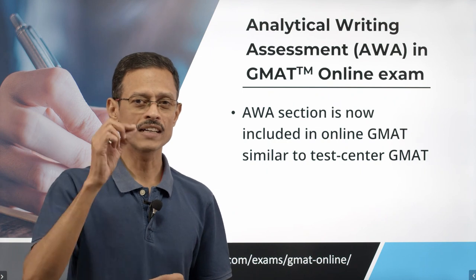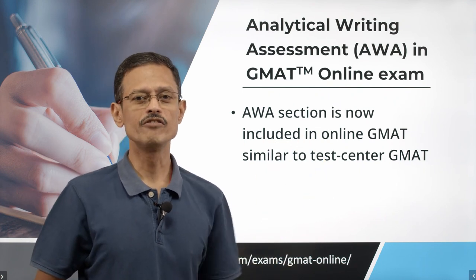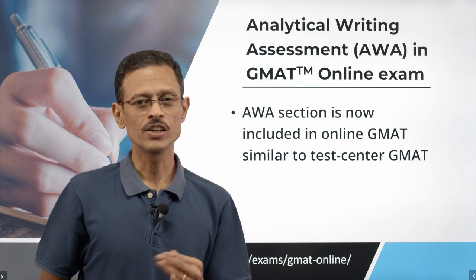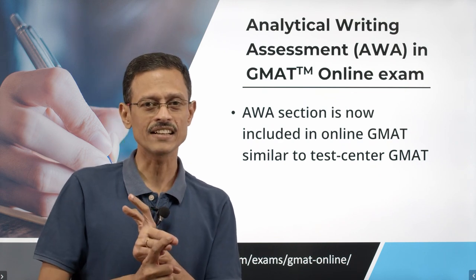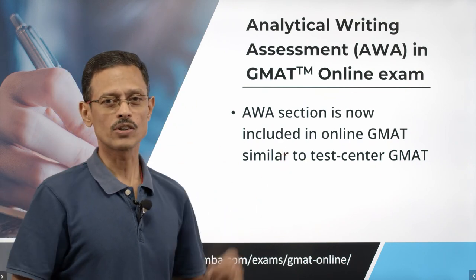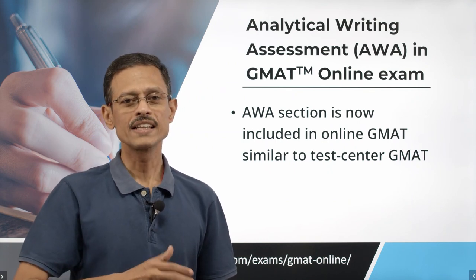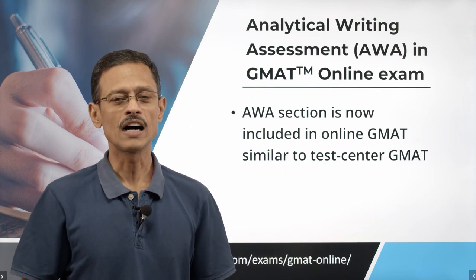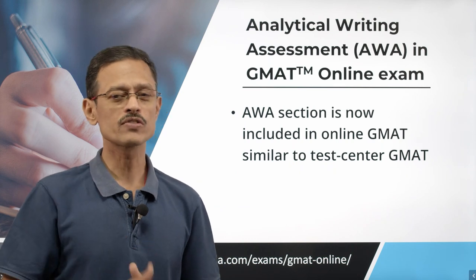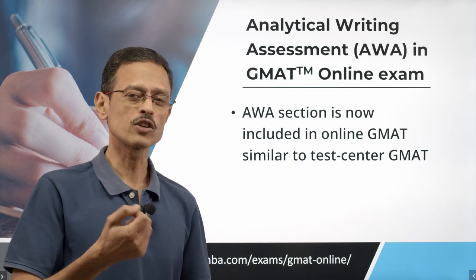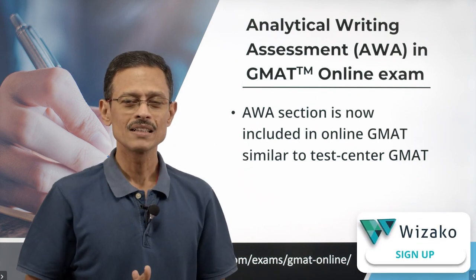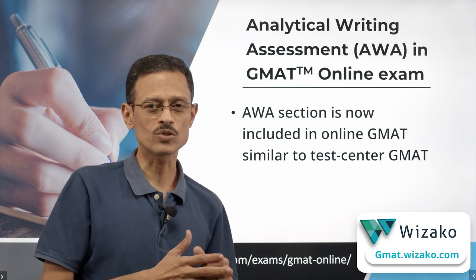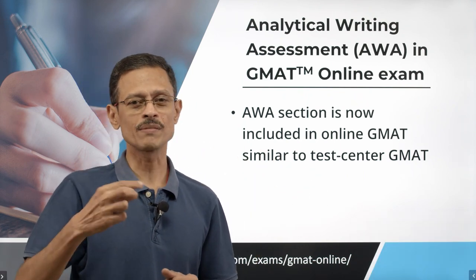The first change: the online examination till April 7th did not have the AWA — Analytical Writing Assessment section. You only had the remaining three sections: Quant, Verbal, and Integrated Reasoning. The problem was that though many schools officially said they would be indifferent to which version of the test you take — test center based or online — when you spoke to admissions officers, they said they would have a preference for scores submitted with the AWA.